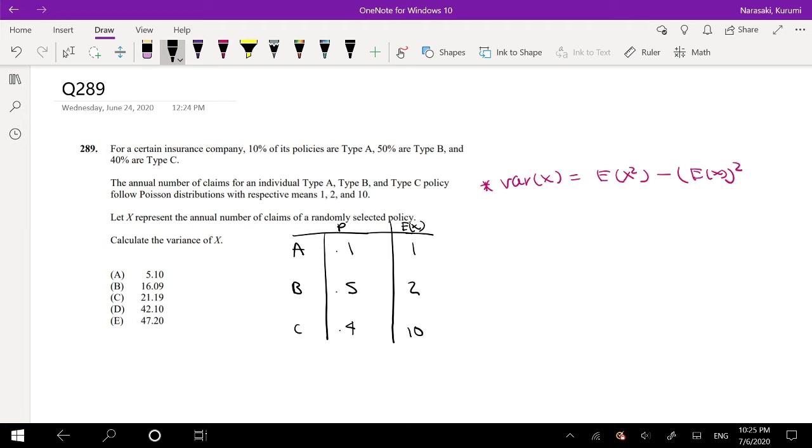Okay, so to find the expectation E(X), that's pretty simple - you just multiply the expected value times its probability. So that's 1 times 0.1 plus 2 times 0.5 plus 10 times 0.4, which is equal to 5.1.